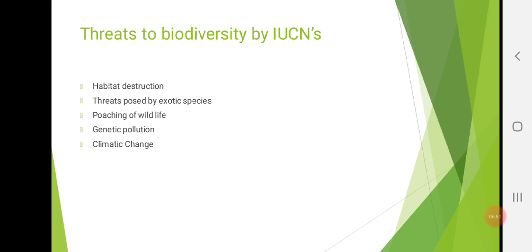Then, these ten different areas in previous slide, we have studied thoroughly. Now, after that, we have learned threats to biodiversity by IUCN. So, what are the basic threats to any biodiversity? It's habitat destruction, deforestation, we can call it as threats posed by exotic species, poaching of wildlife, genetic pollution and climatic change. These are the basic threats to biodiversity.